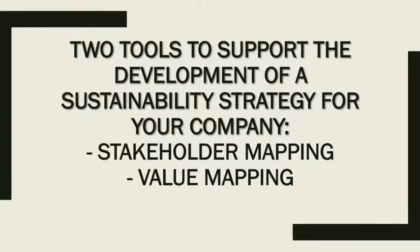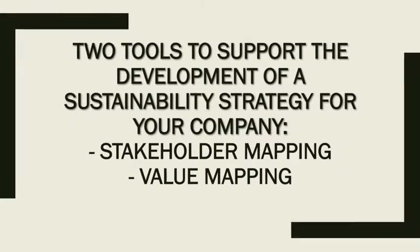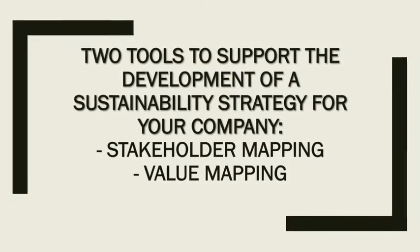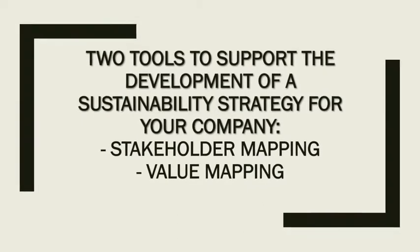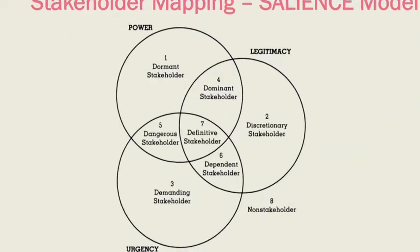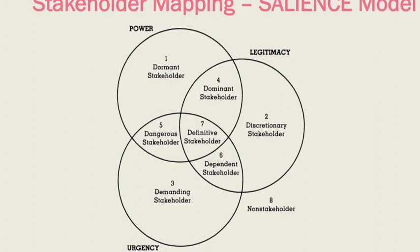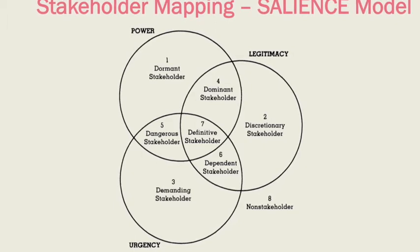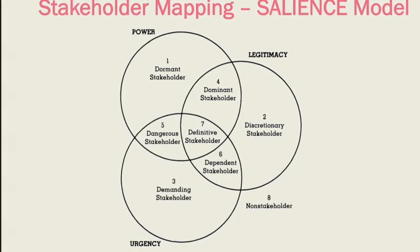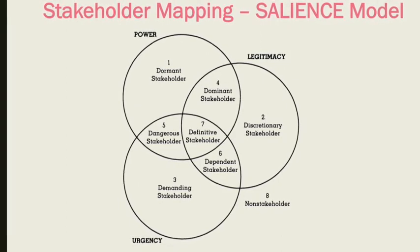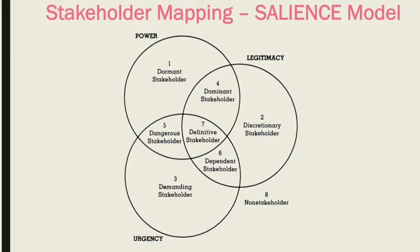Today we are going to be talking about two specific tools that will help you develop the sustainability strategy for your company. Those tools are the stakeholder map and the value mapping tool. Let's start with stakeholder mapping. This diagram will help us identify individuals or organizations that are of interest to the company. The stakeholder mapping tool was developed by Ron Mitchell and his colleagues in 1995 and has been very influential in defining stakeholders.